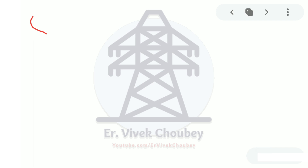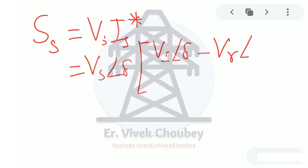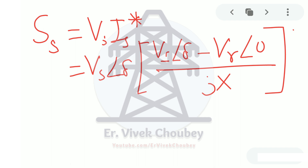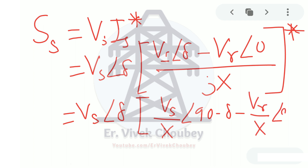Now the apparent power on the sending end side, Ss, is given as Vs times Is conjugate. We have Vs at angle δ and Is as (Vs∠δ − Vr∠0) / jX. Removing the conjugate sign, this becomes Vs at angle δ times Vs/X at angle (90 − δ), minus Vr/X at angle 90°.